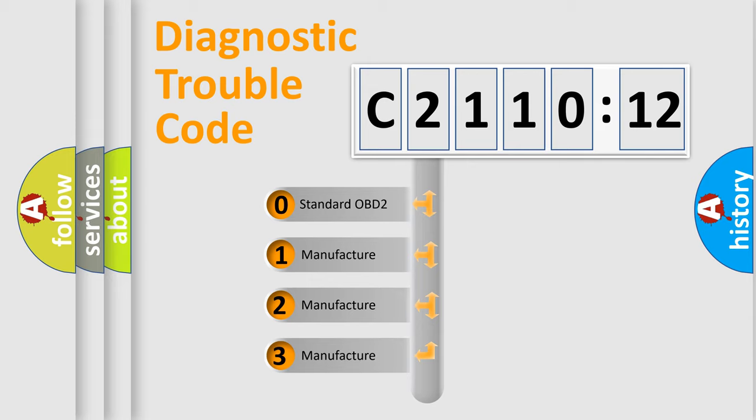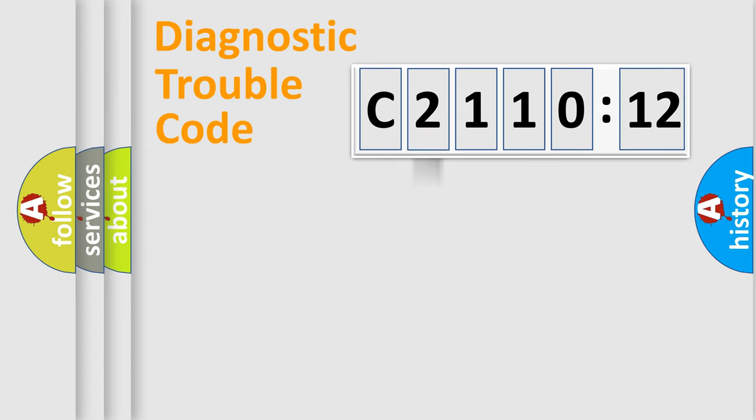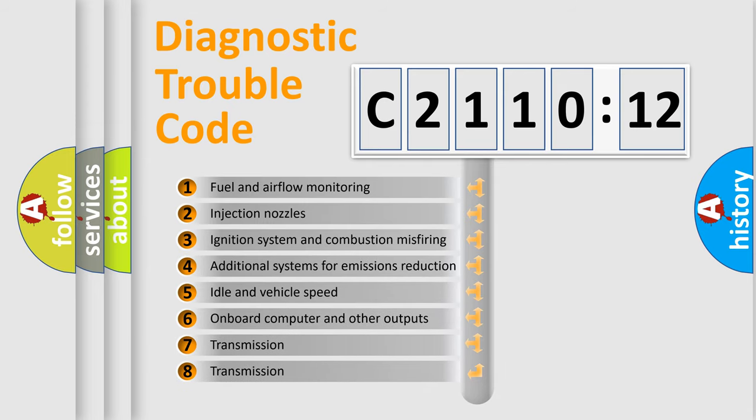If the second character is expressed as zero, it is a standardized error. In the case of numbers 1, 2, 3, it is a car-specific error.